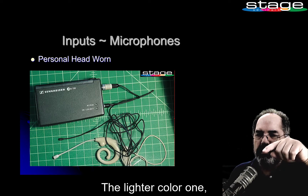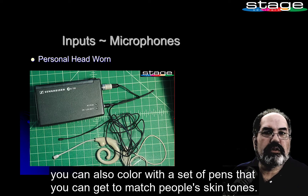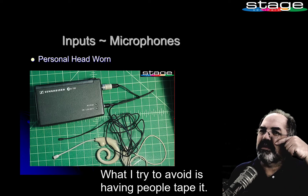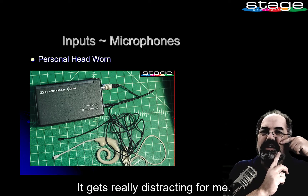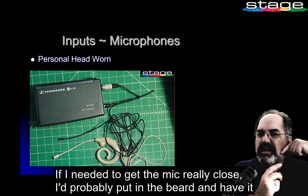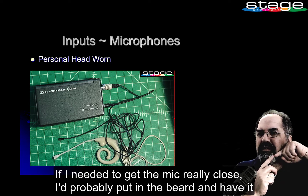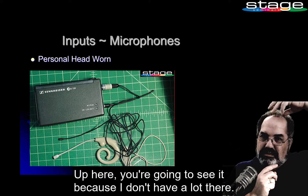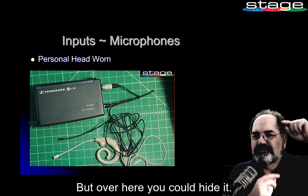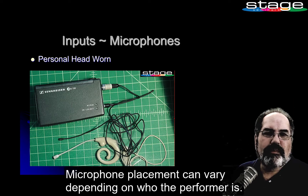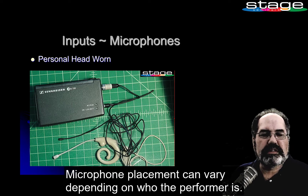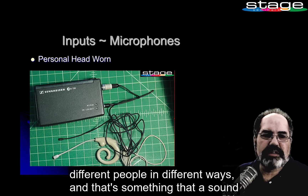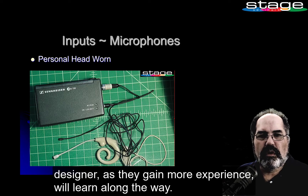The lighter color one you can also color with a set of pens to match people's skin tones. What I try to avoid is having people tape the microphone on their cheek — it gets really distracting. If I needed to get the mic really close, I'd probably put it in the beard and have it just stick out a little bit, or up to the side where you could hide it. Microphone placement can vary depending on who the performer is, and that's something a sound designer will learn with more experience.